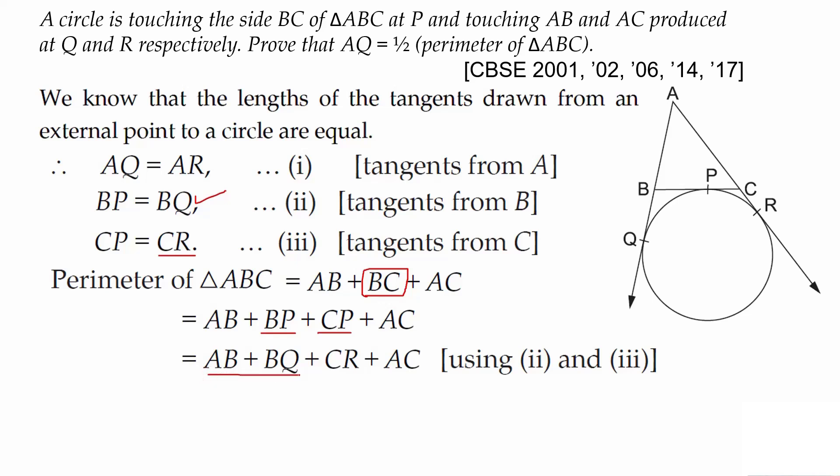AQ plus AR. These two are also equal from equation 1. So we can write AQ plus AQ or 2 times AQ. Therefore, perimeter of triangle ABC is 2 times AQ, so AQ equals half the perimeter of triangle ABC.